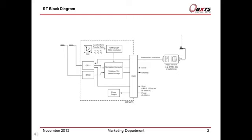Either one or two GPS cards can be fitted into the RT. The RT includes survey-grade GPS cards with very accurate velocity information. This is essential for providing good corrections for the inertial sensors.